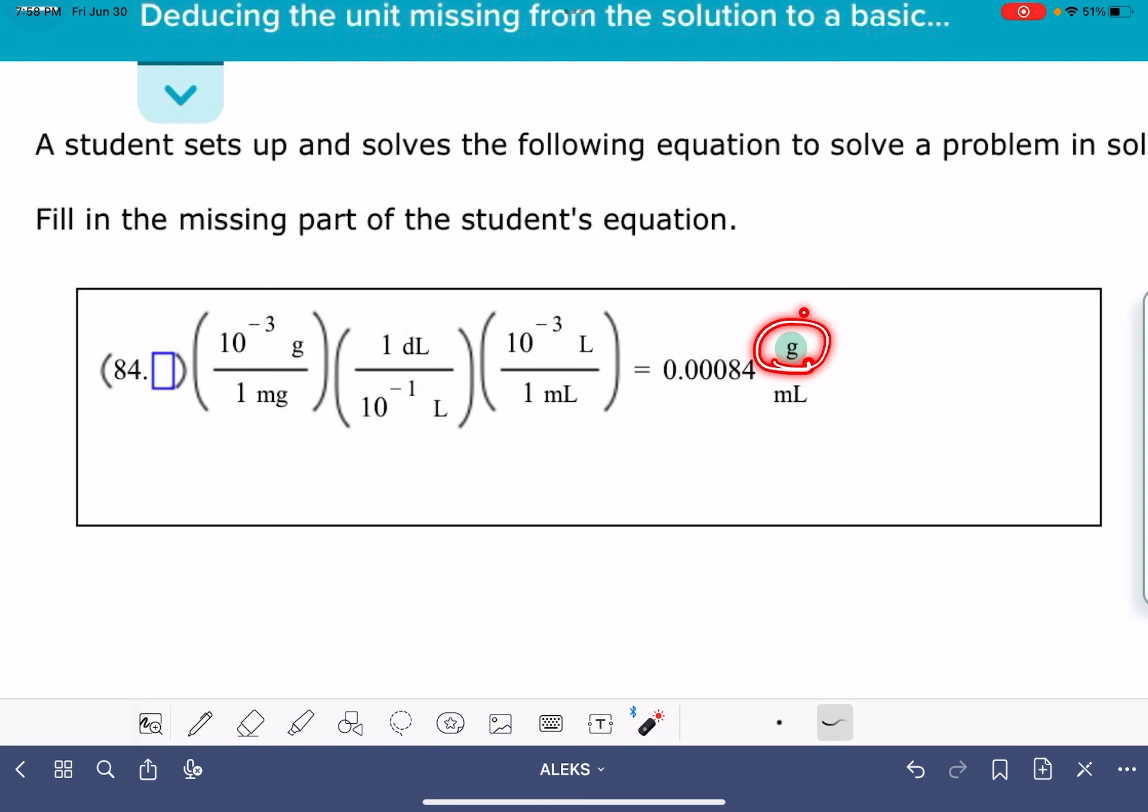What we need to do is go over to the left-hand side of the equation, and we need to find the gram unit. Boom, there it is. Let's highlight it. It's an important unit. Let's do the same thing for milliliter. The milliliter on the bottom of the right-hand side, we need to also find it on the bottom of the left-hand side. Notice that they are not only the same unit, but they're also in the same place, meaning either the top or the bottom.